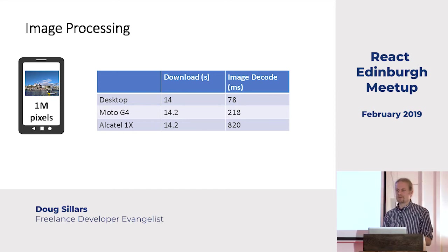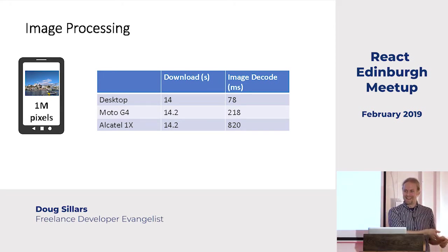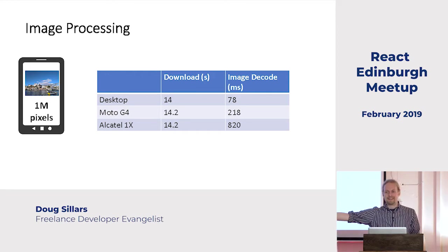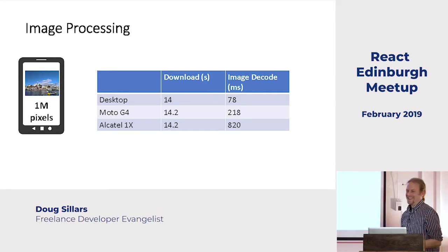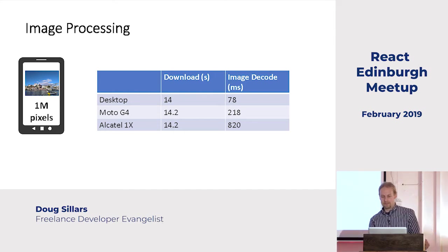Have you heard of Android Go phones like the Alcatel 1X? They're really low-powered devices — I call them Tesco phones, the kind you buy at Tesco between the toilet paper and the paper towels. They're 50 pounds and get people a smartphone, but they have bad screens, not a lot of memory, and they're the phone at the end of the Carphone Warehouse display that isn't plugged in because they don't want you to see how slow it is. On that device, it takes 800 milliseconds for the image to decode — you're adding a whole extra second for the image to show up on screen.